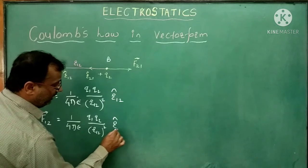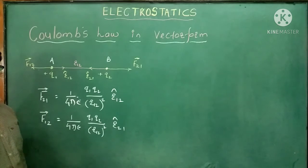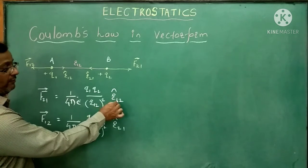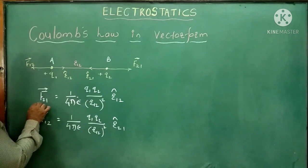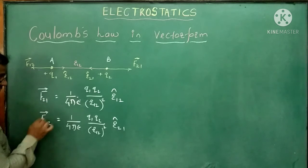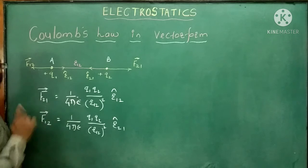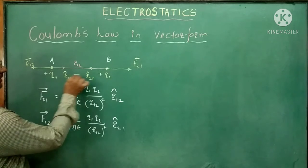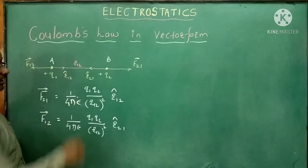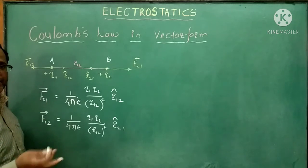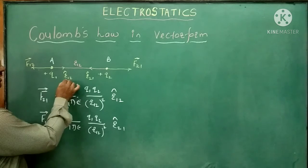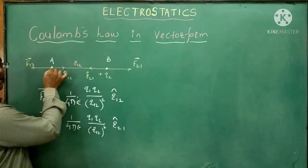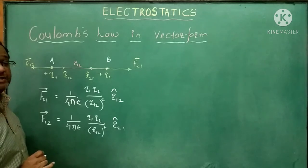R̂21 is the unit vector from the second to the first charge, while R̂12 is the unit vector from the first to the second charge. If we compare these unit vectors, their magnitudes are the same — simply 1 — but their directions are opposite. The direction of R̂12 is along AB, but the direction of R̂21 is along BA.